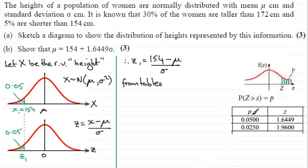From the tables here you'll see that if P is 0.05 then the corresponding Z value is 1.6449. Remember this is the number of standard deviations above the mean that would give us this probability.